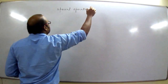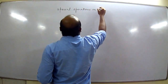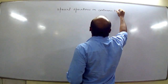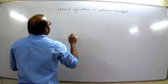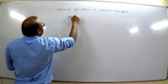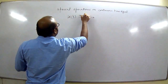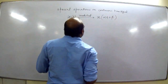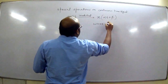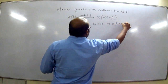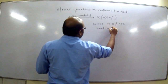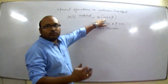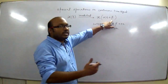Special operations on continuous time signals: in special operations, x(t) is modified in the form of x(αt + β), where α and β are real numbers. Here α is responsible for scaling of the signal and β is responsible for time shift of the signal.